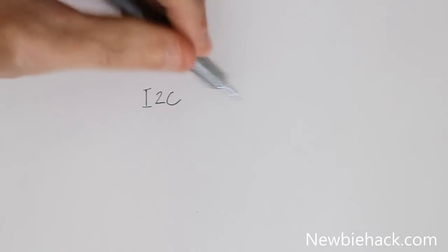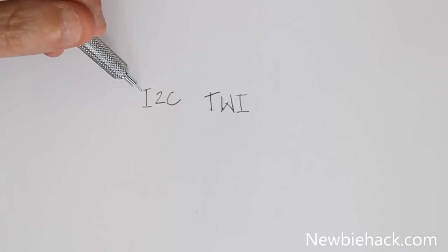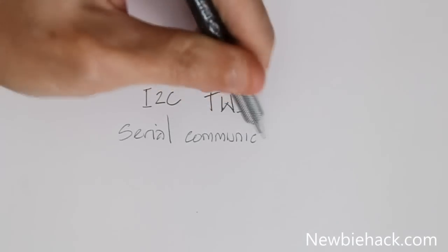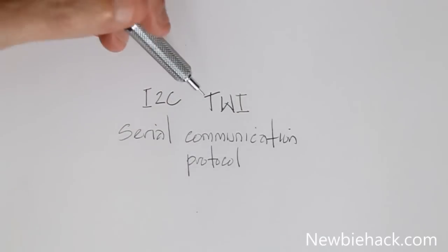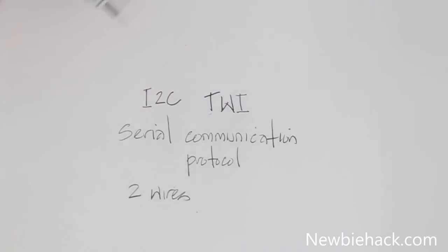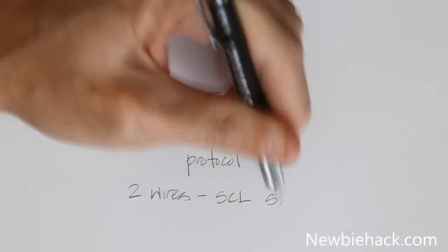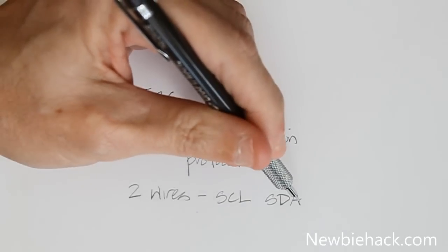In this video, I'm going to talk about I2C, or two-wire interface. I2C is a serial communication protocol that allows communication over two wires, hence the two-wire interface. The two wires are SCL and SDA. SCL is the clock, and SDA is the data.